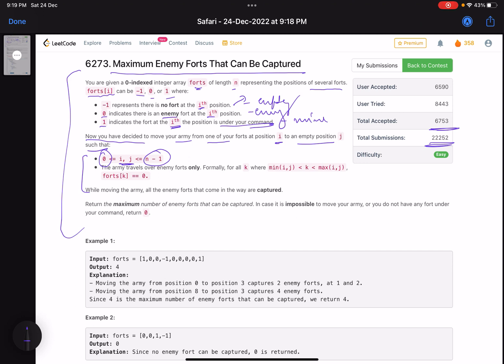What is the other condition? This is the condition that is causing too many wrong answers. It says that the army travels over enemy forts only. It will not travel over empty forts. Formally, for all k where min(i,j) lies between, for all the k the forts[k] should be 0.